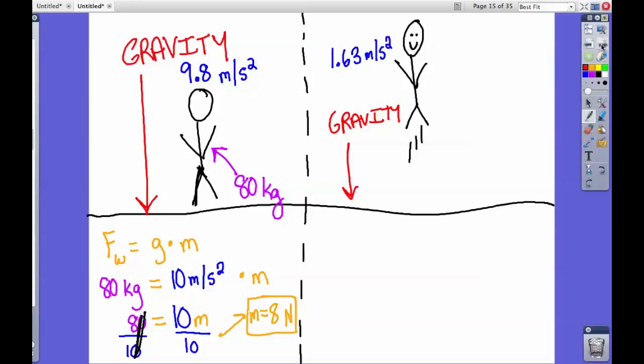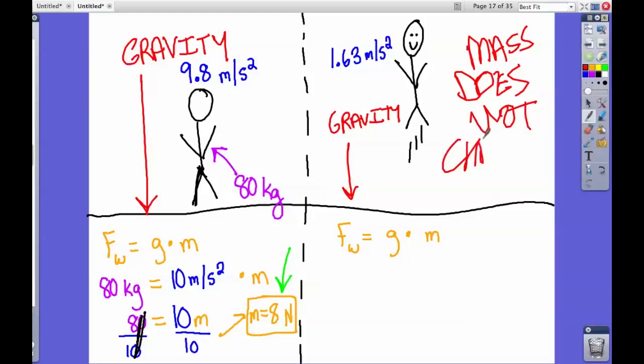Now let's look at my mass on the Moon. We use the same formula: F_w equals g times m. We know that the mass is 8 newtons, because mass does not change. Mass does not change ever. No matter where you go, mass does not change.